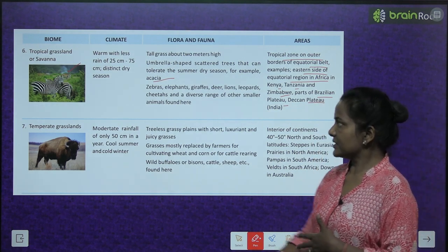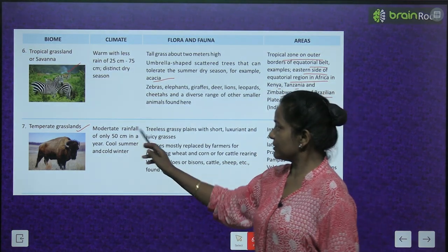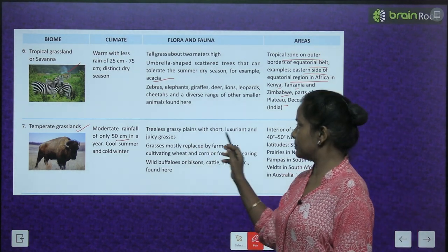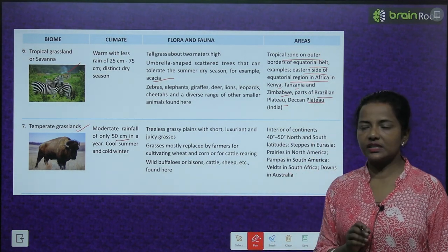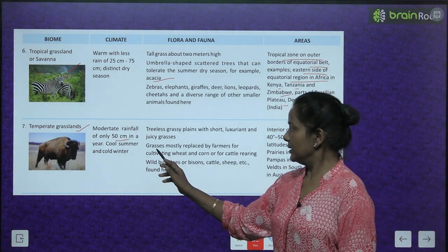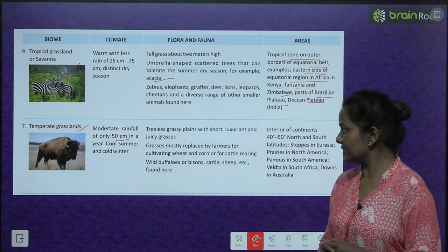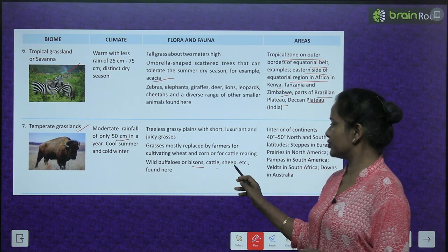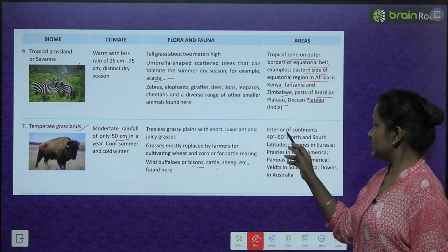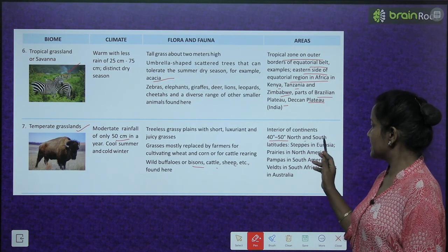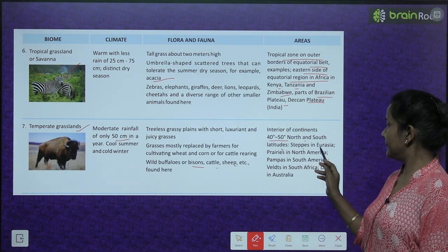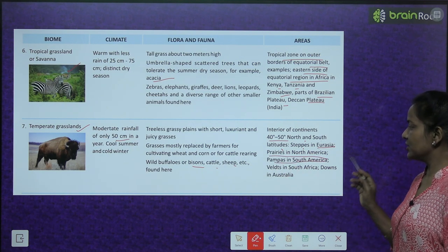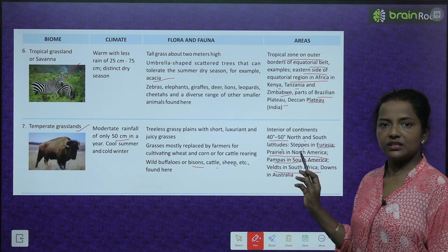Next is the temperate grassland. Moderate rainfall of only 50 cm in a year; cool summer and cold winter. Tree-less grassy plains with short, luxuriant, and juicy grasses. Grasses mostly replaced by farmers for cultivating wheat and corn, or for cattle rearing. Wild buffaloes or bison, cattle, and sheep are found here. Location: interior of continents, 40° to 50° north and south latitudes — steppes in Eurasia, prairies in North America, pampas in South America, veld in South Africa, and downs in Australia.